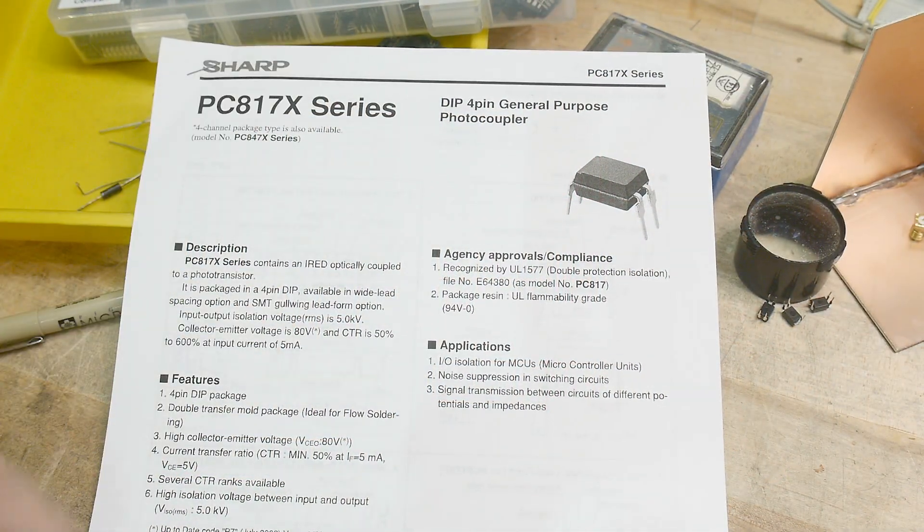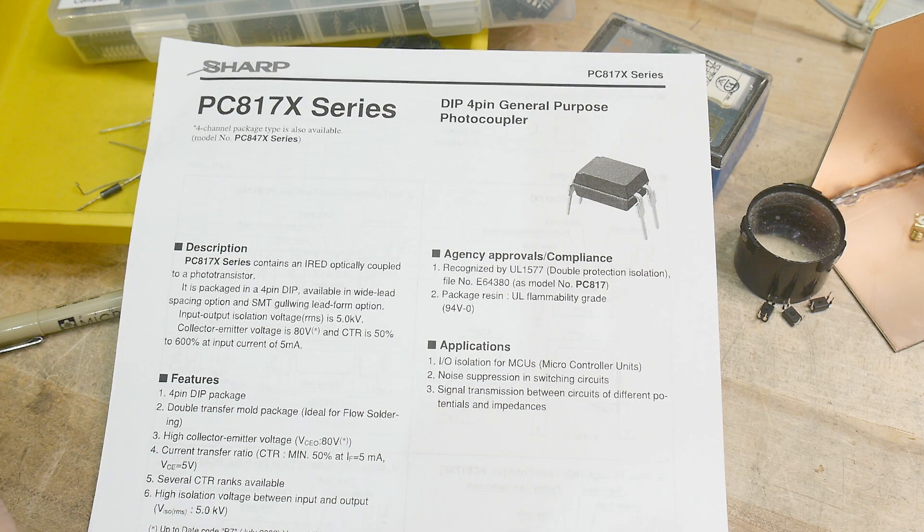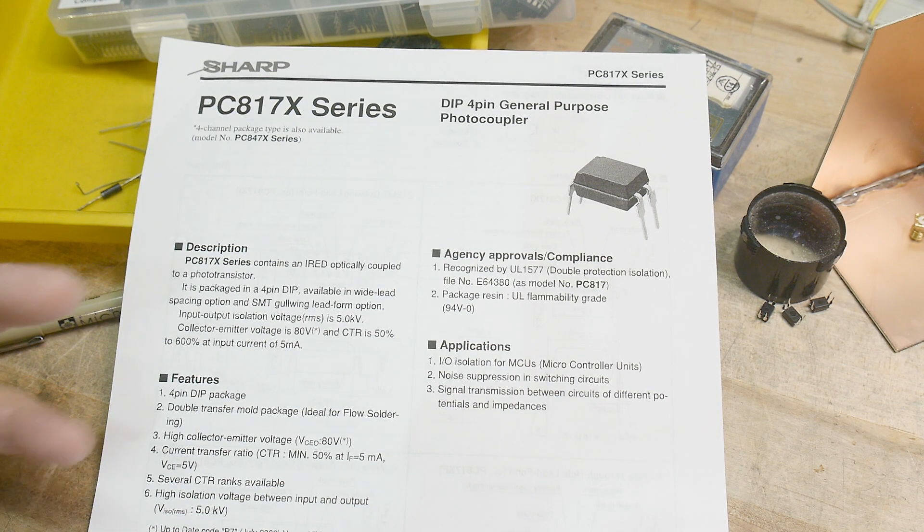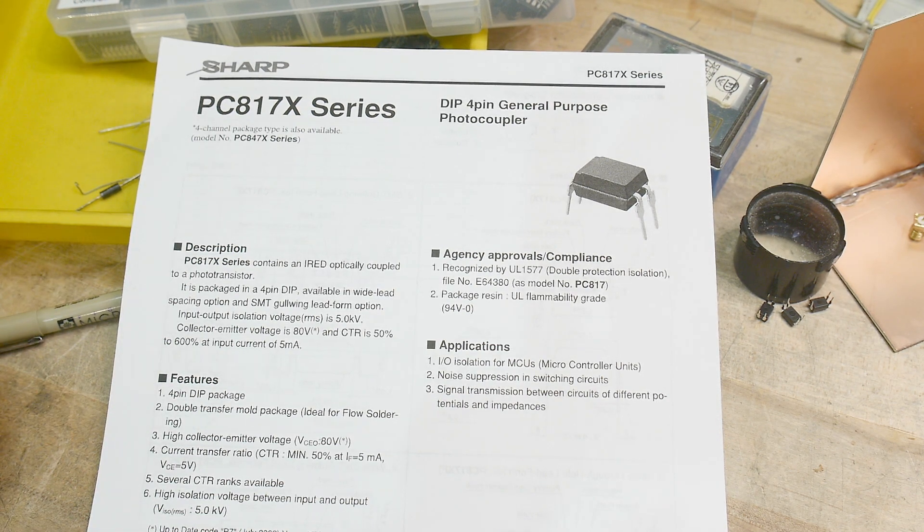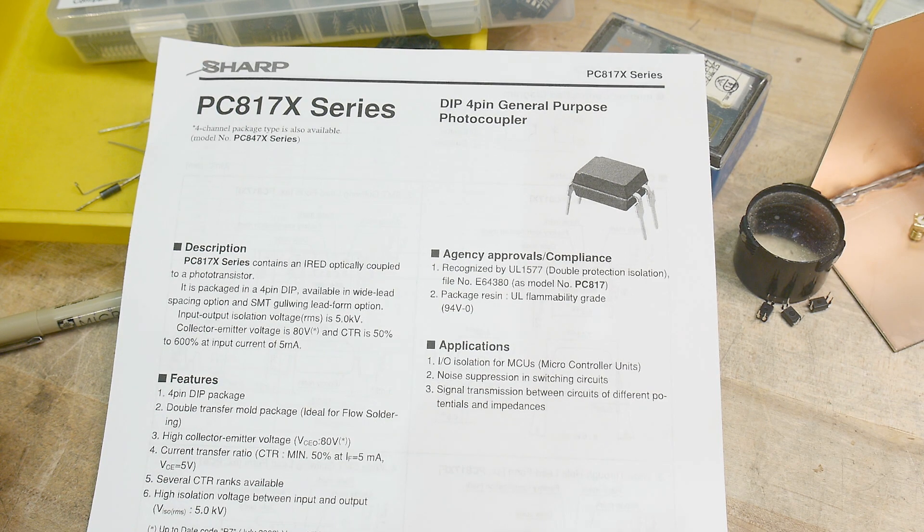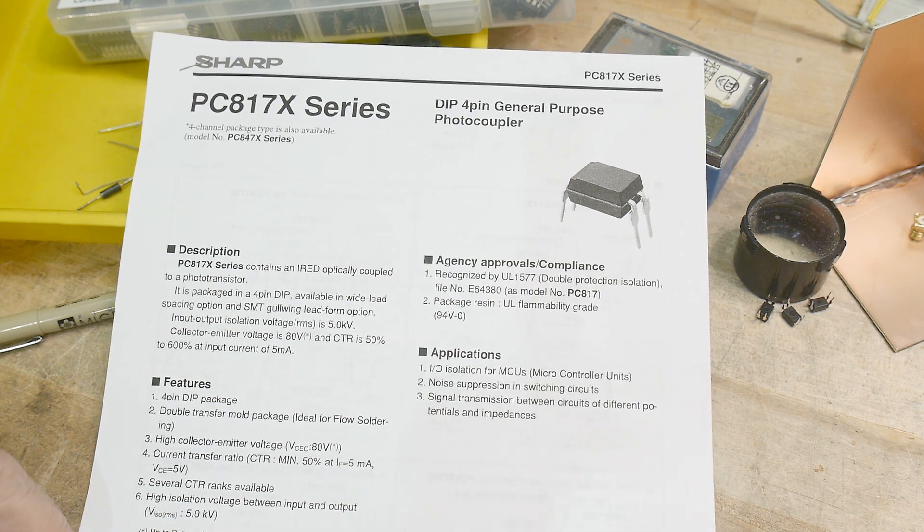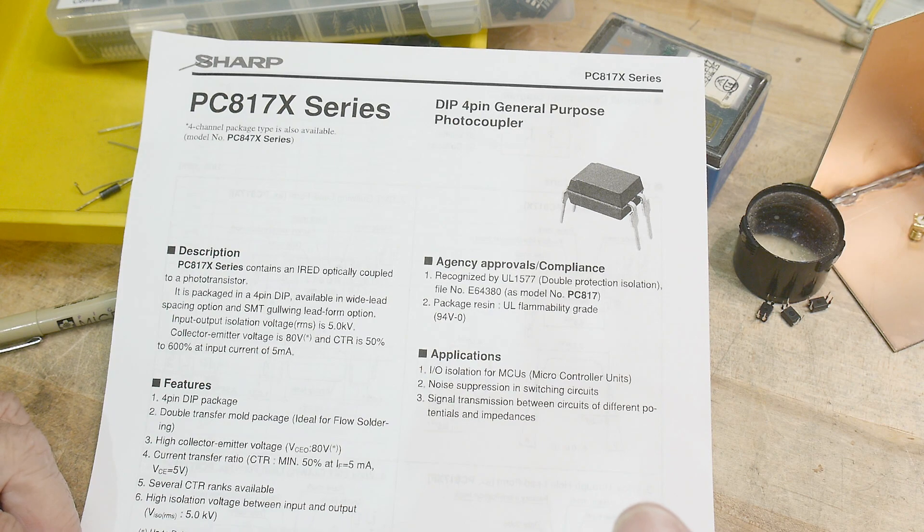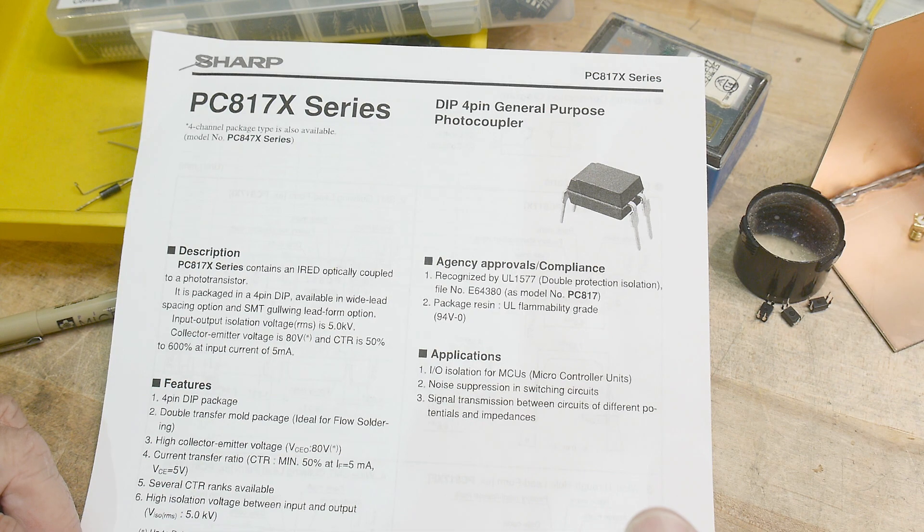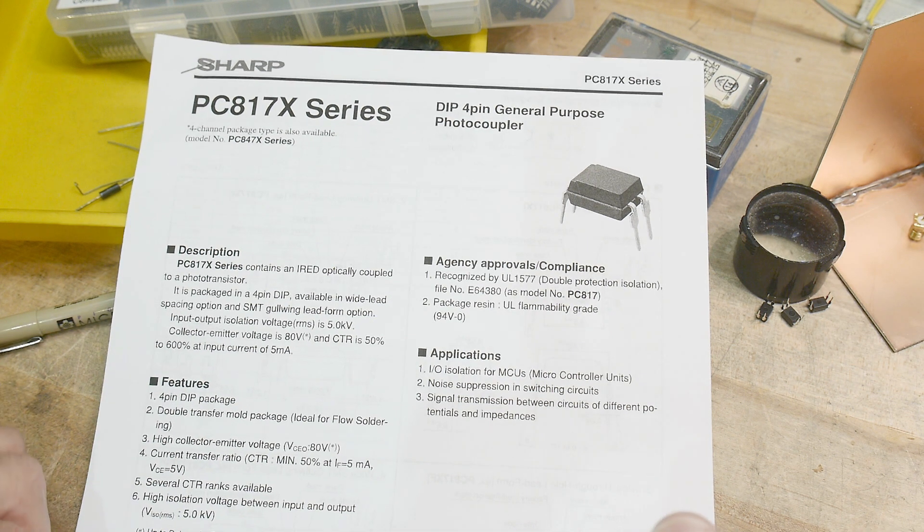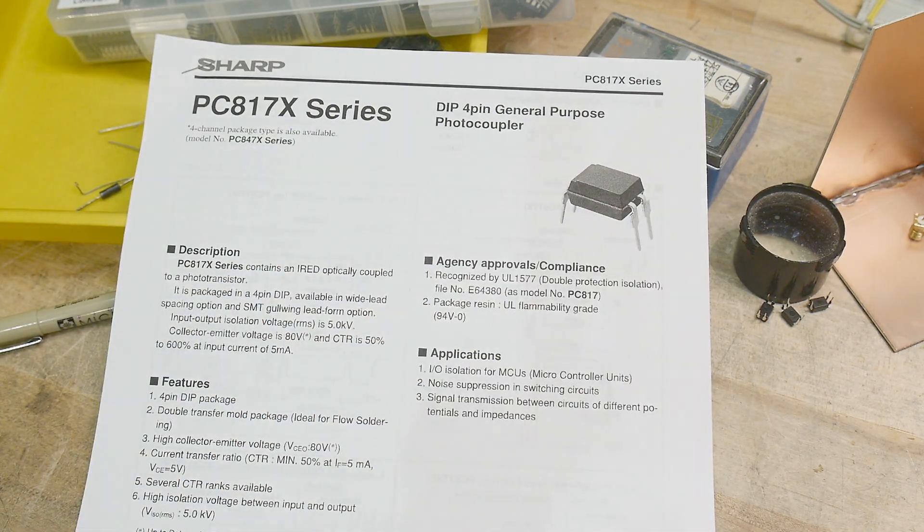Chip of the day, a PC817 four pin general purpose photocoupler. Sometimes you'll see it called a photo isolator, photocoupler. There's a whole bunch of names people use for these things. Optocoupler, photocoupler. Anyway, you know what it is. It's one of those things.